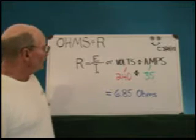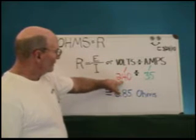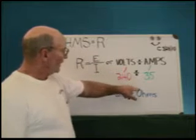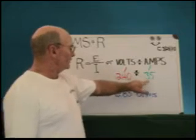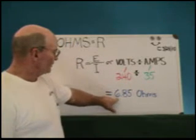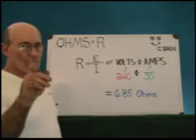So if you have a hot tub that takes 240 volts and 35 amps, you divide that 240 by 35, you have 6.85 ohms of resistance. That's formula one.